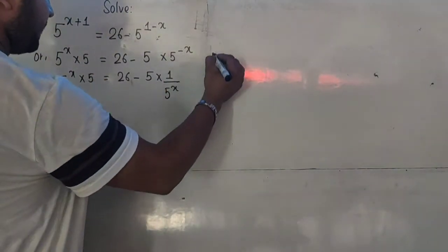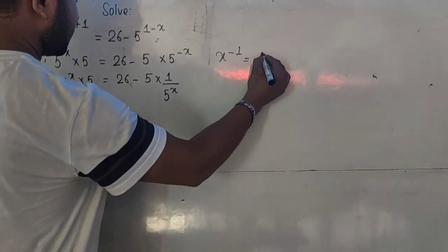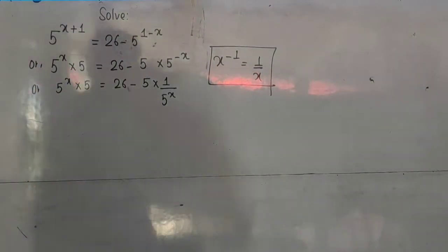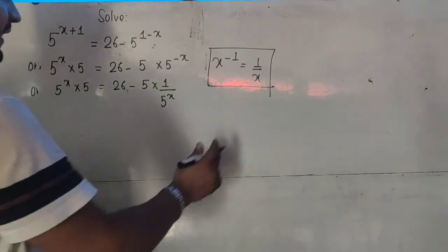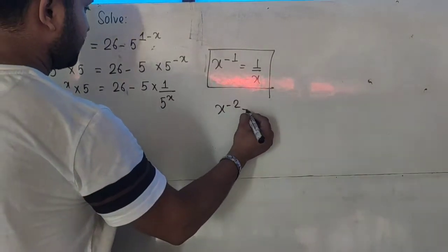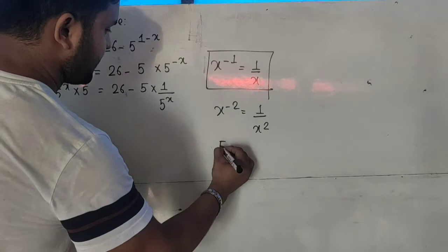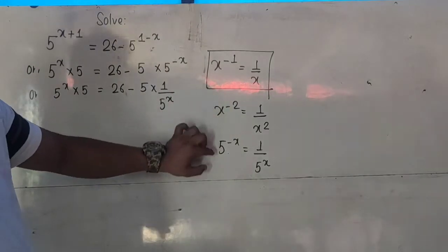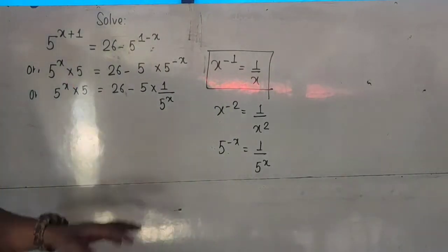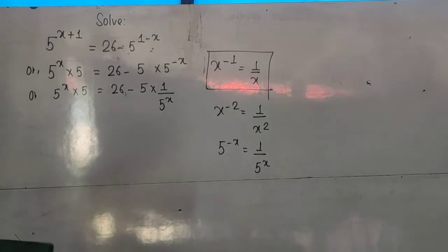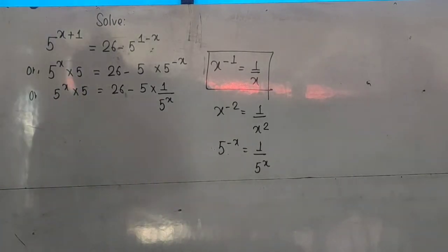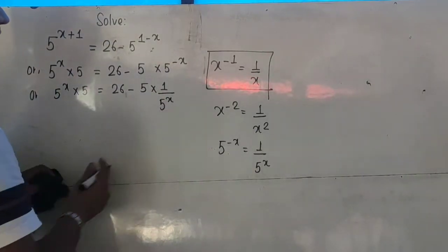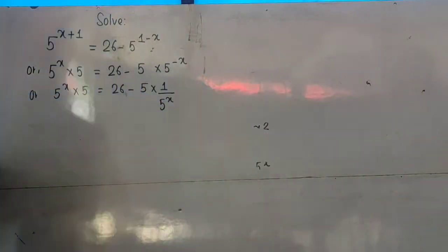By the rule of indices, x to the power minus 1 can be written as 1 over x. So x^(-2) is 1 over x squared. Similarly, 5 to the power minus x can be written as 1 over 5^x. So 5^(-x) equals 1 over 5^x — this is the rule of indices you should know.